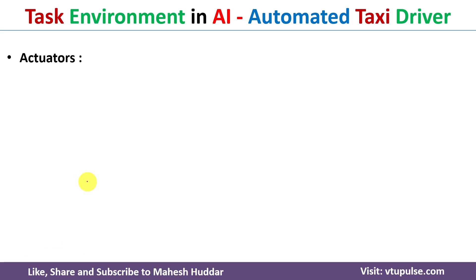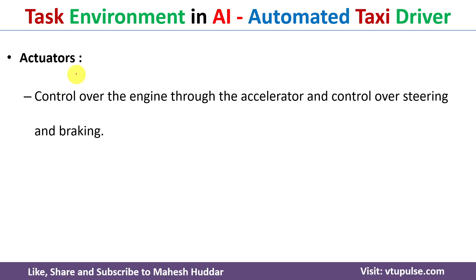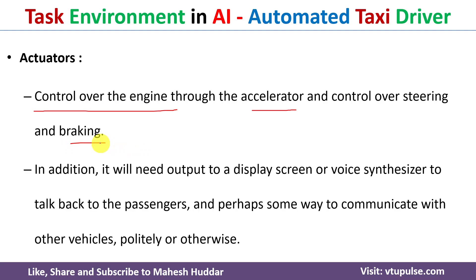The third component of task environment is actuators. With the help of actuators, the agent performs actions. In this case, control over the engine is required, which can be done with the accelerator; control over steering and braking is also required. In addition to these main components, we need a display screen or voice synthesizer. With these, passengers can specify the destination and interact with the automated taxi driver, and the automated taxi driver can also communicate with other vehicles.